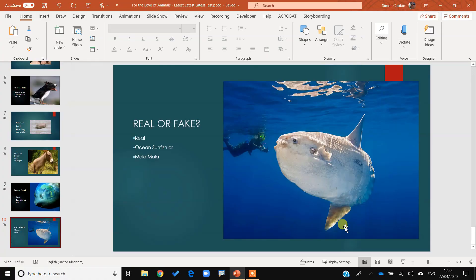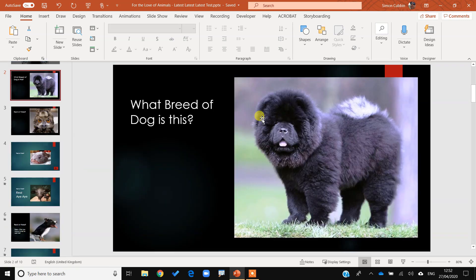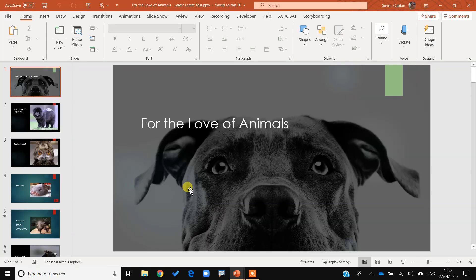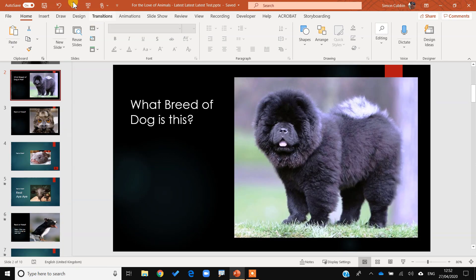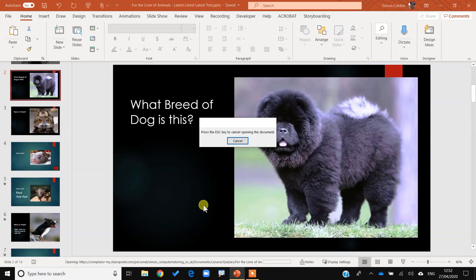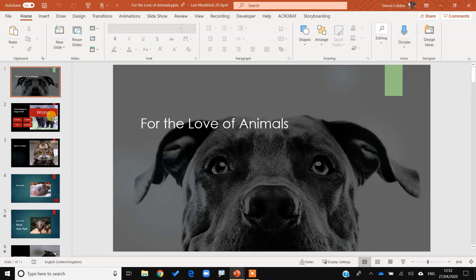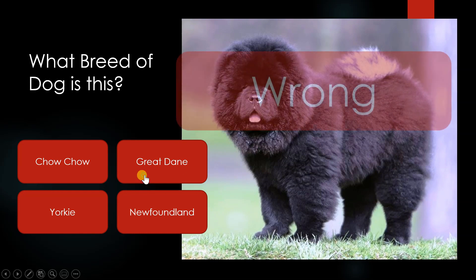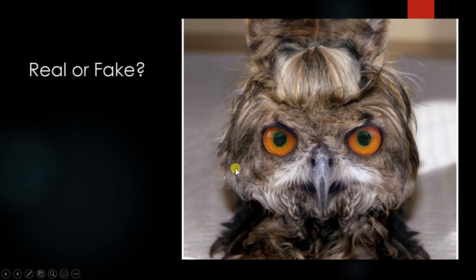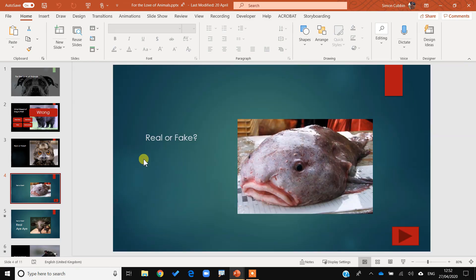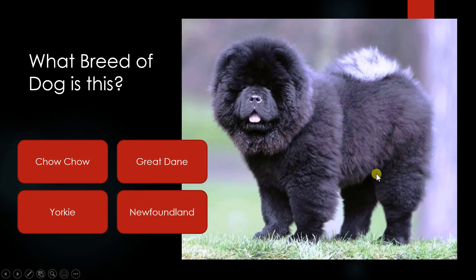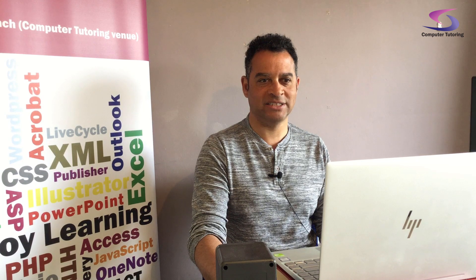What I need to do is add in these questions. If you remember before, we did a series of buttons — we had the chow chow. Here I've got the latest test, that's the one. We went here and when we played this one you decided on whether it was a Great Dane and it was wrong — that type of thing. So if I clicked on chow chow it came up correct and went to the next one.